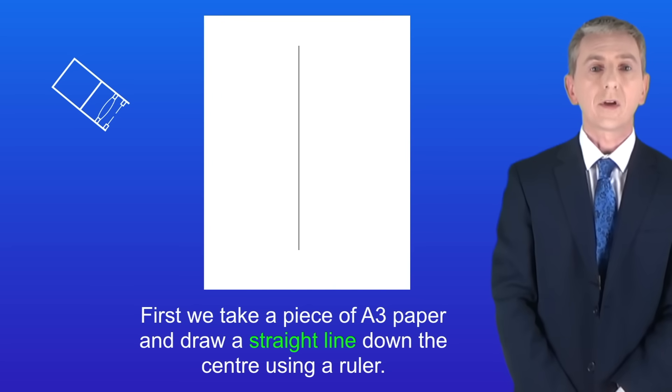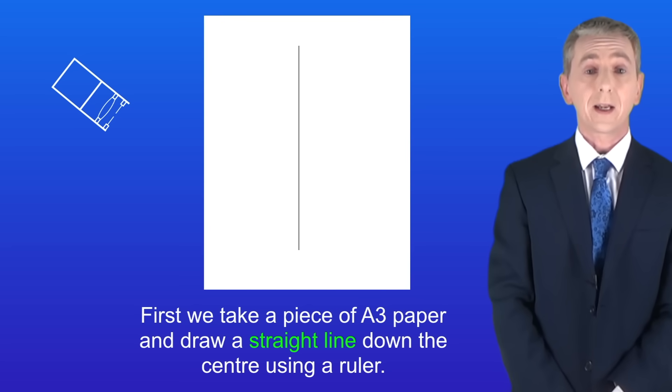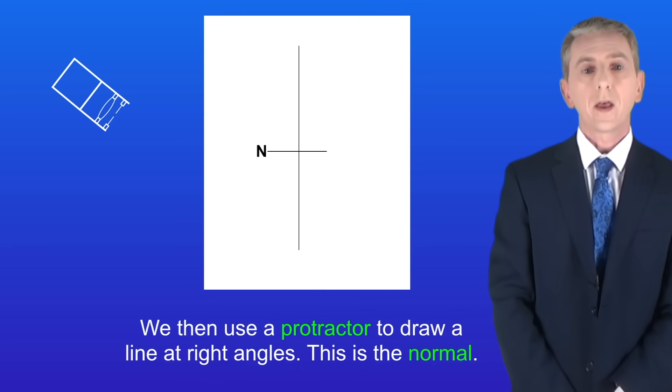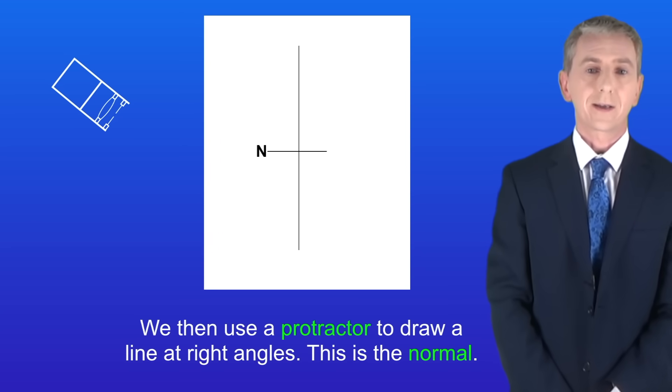First we take a piece of A3 paper and draw a straight line down the center using a ruler. We then use a protractor to draw a line at right angles. This is the normal so we label this N.